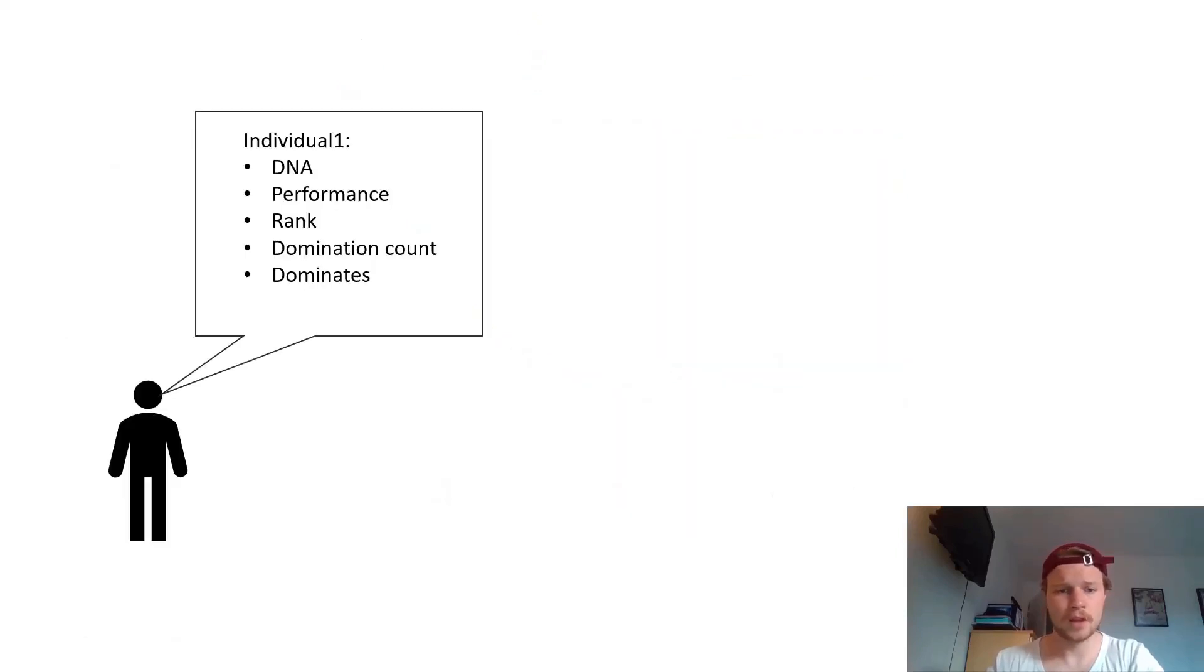So to implement this in our existing NSGA, we first have to give every individual in our search a new attribute. I call it the constraint count. Perhaps you remember it from my last video. Every individual has different attributes like DNA. So in our case for the problems, these would be X1 and X2, the X-array, the performance, which would be the values for F1 and F2 and so on. And for every constraint the individual doesn't satisfy, the constraint count will be increased by one. Means the higher the constraint count, the more constraints are not satisfied.